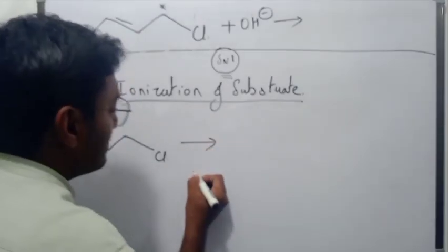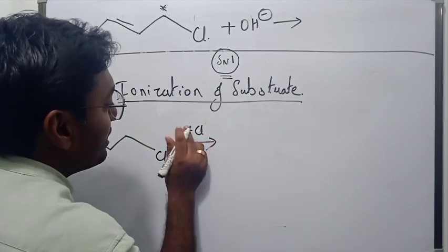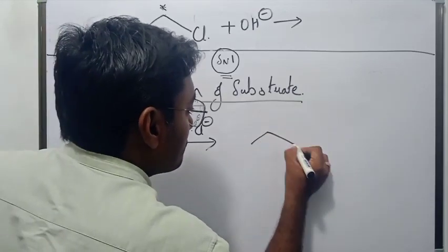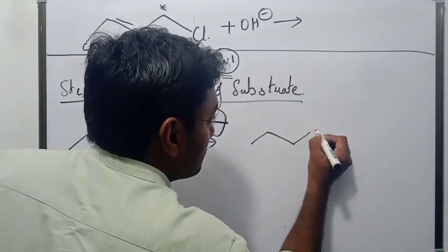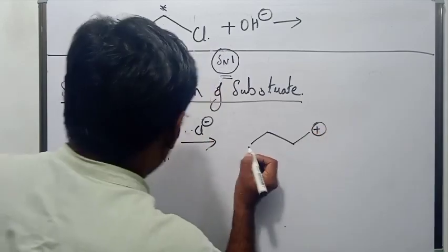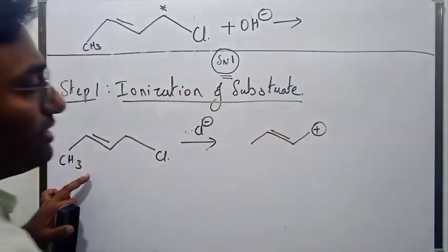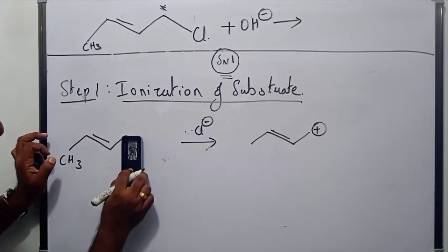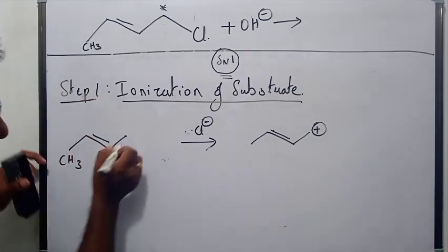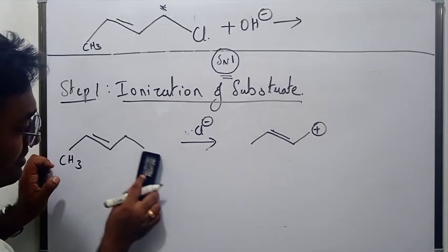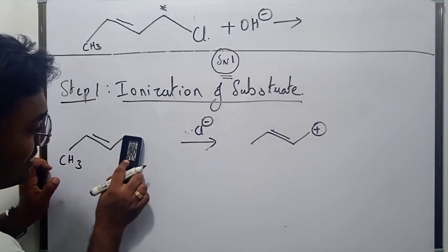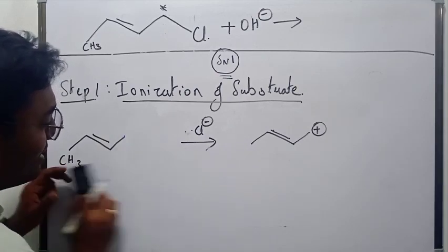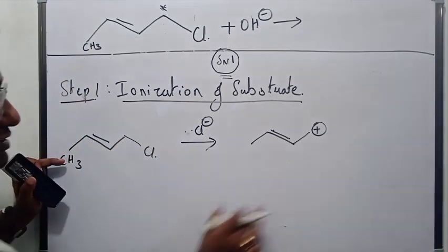When the substrate ionizes, Cl⁻ departs as the leaving group. The C–Cl bond breaks and the carbon atom becomes positively charged, giving us a carbocation — carbocation A. This is the normal, expected carbocation formed upon ionization of the allylic halide.